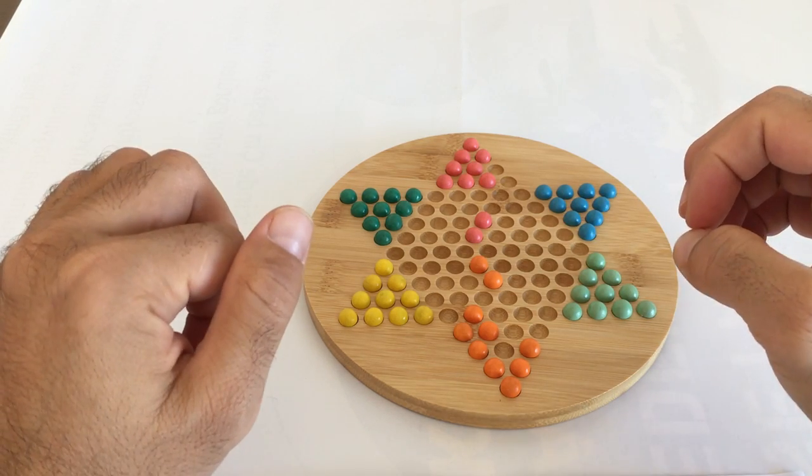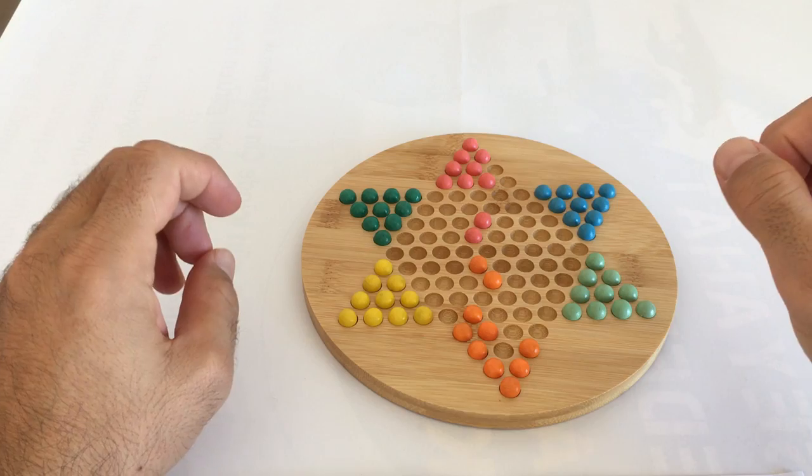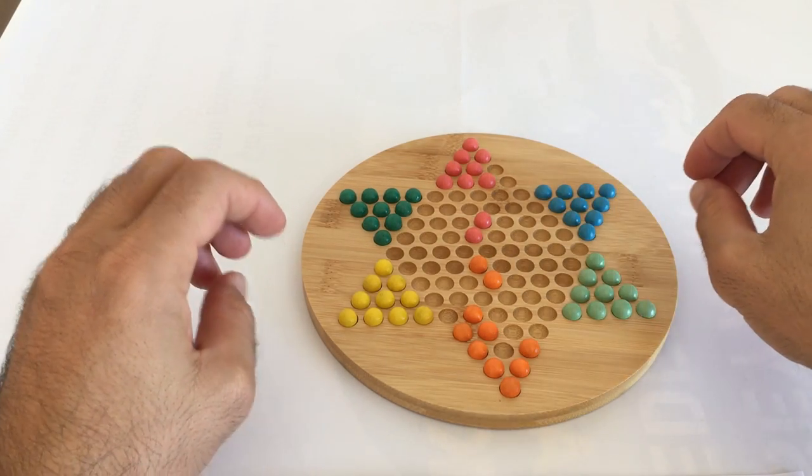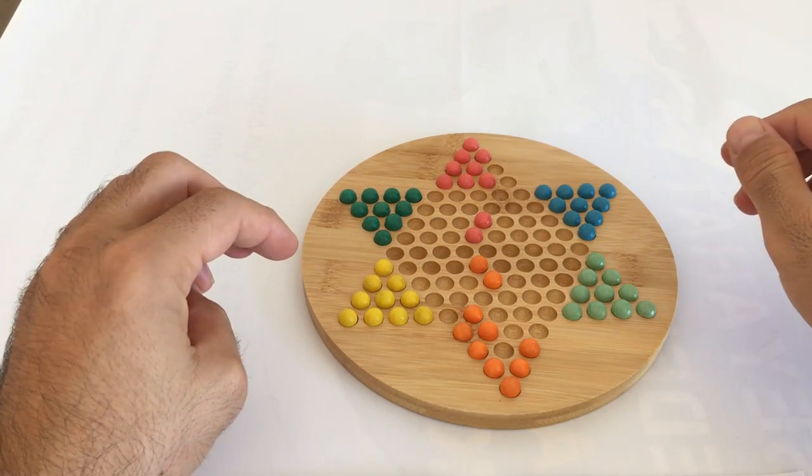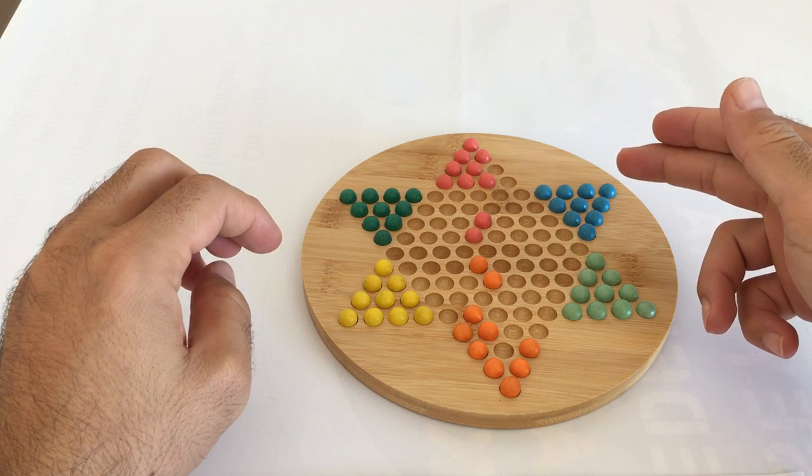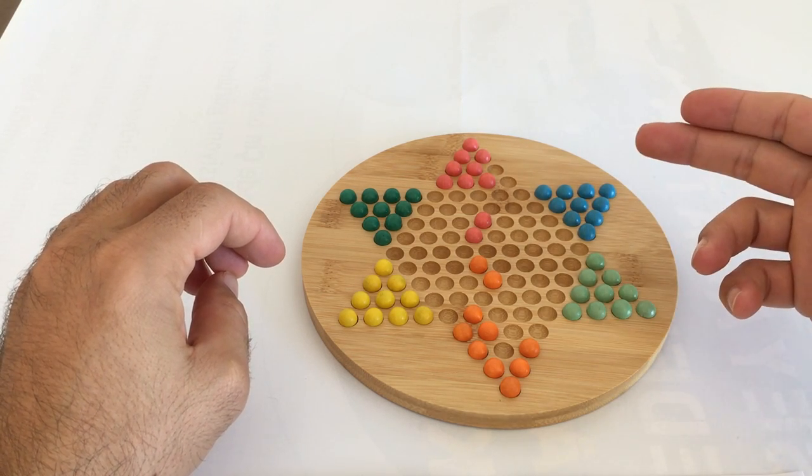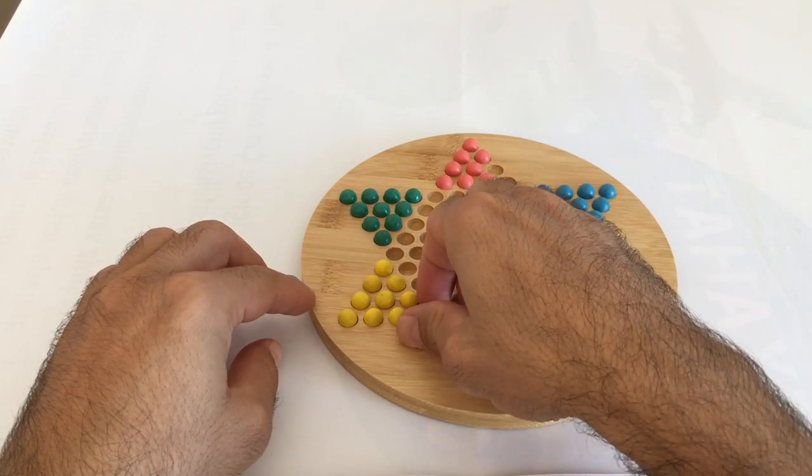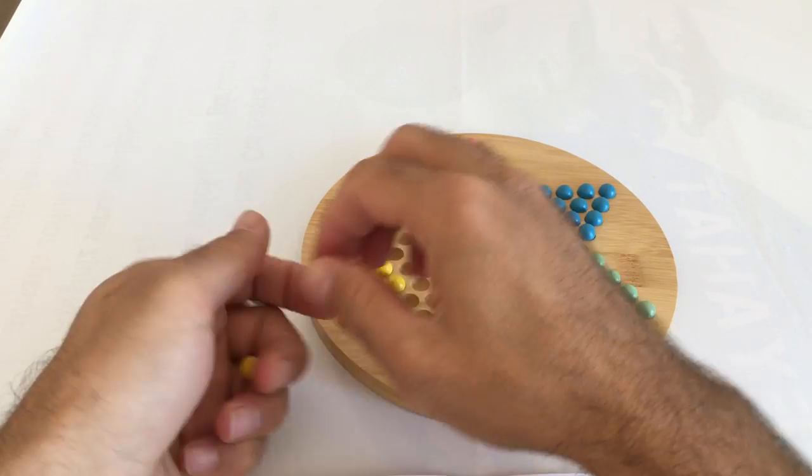Four or more players can choose any start point as base. For example, we are three and one of our friends chooses the blue one. So what will happen? You are going to just remove all the balls, all the yellow balls.